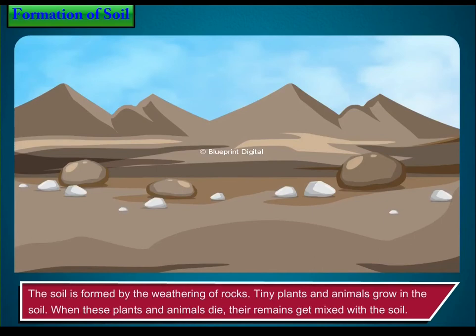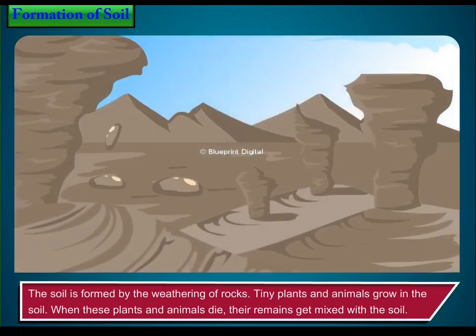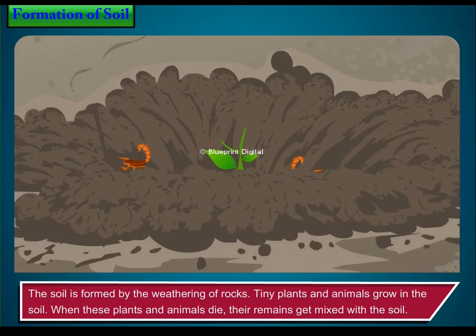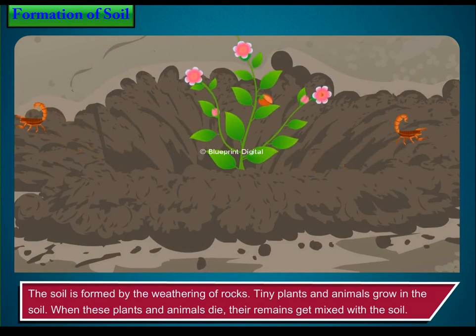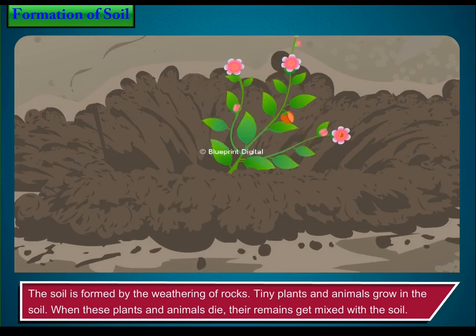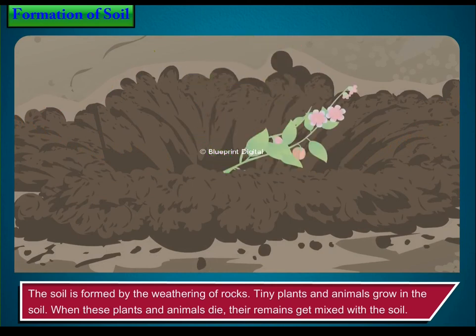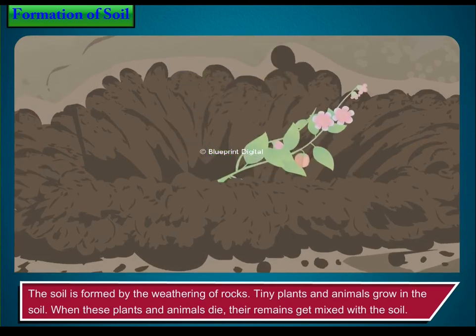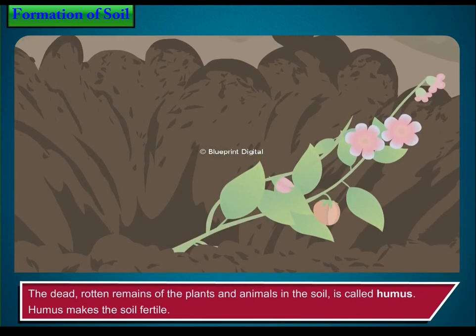The soil is formed by the weathering of rocks. Tiny plants and animals grow in the soil. When these plants and animals die, their remains get mixed with the soil. The dead, rotten remains of the plants and animals in the soil is called humus. Humus makes the soil fertile.